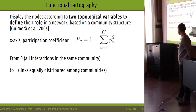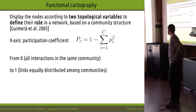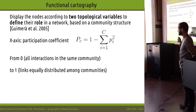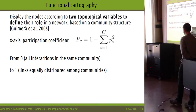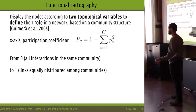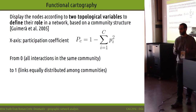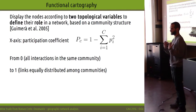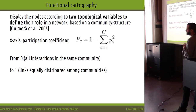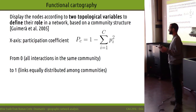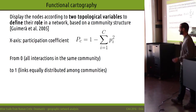One dimension on the x-axis is the participation coefficient, which is a classical measure of diversity. It ranges from 0 to 1: when it is 0, a node is only interacting with nodes in its own community; when it is close to 1, it is interacting with many communities in a very equally distributed way.